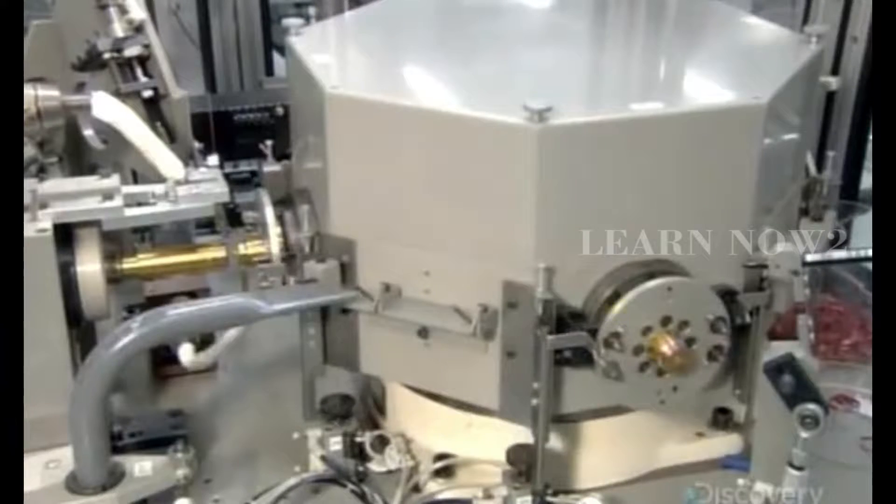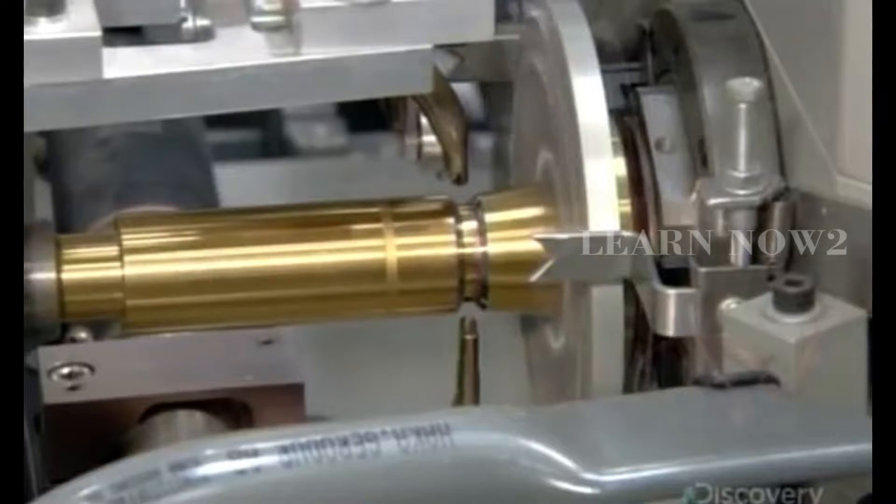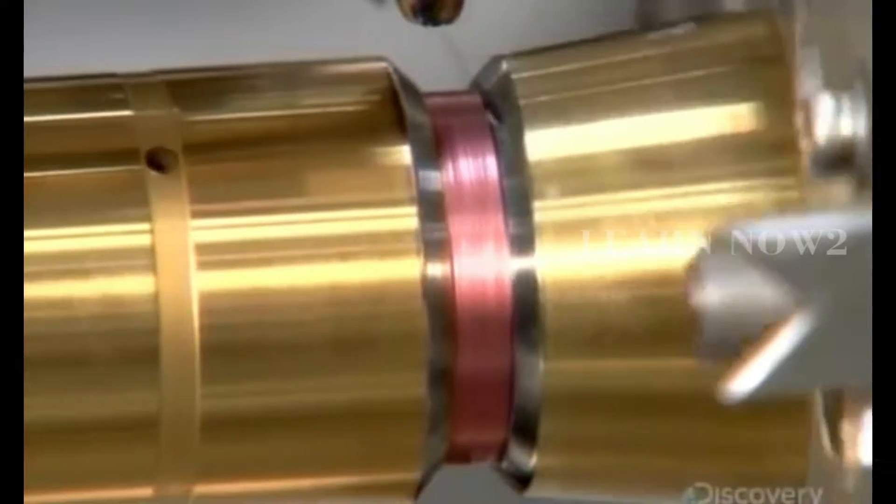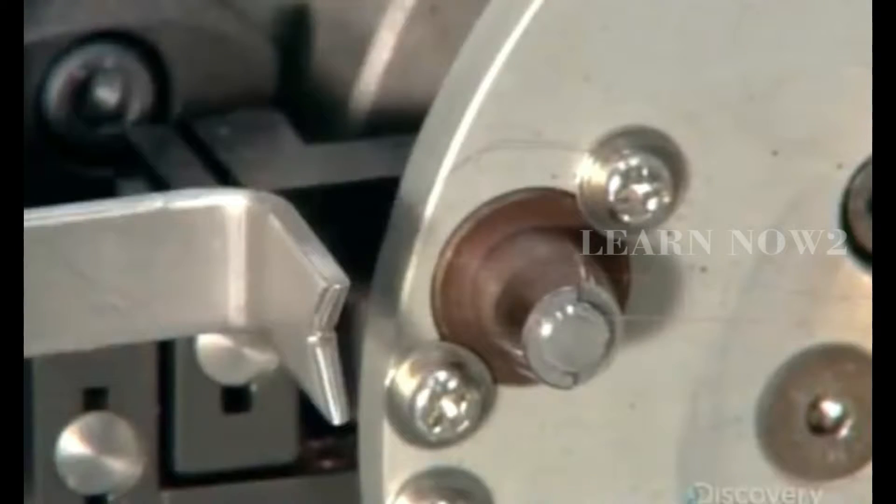The next machine winds copper wire that's as thin as a human hair around a cylinder hundreds of times. The winding is computer-controlled to produce a critical component, the headphone's voice coil.